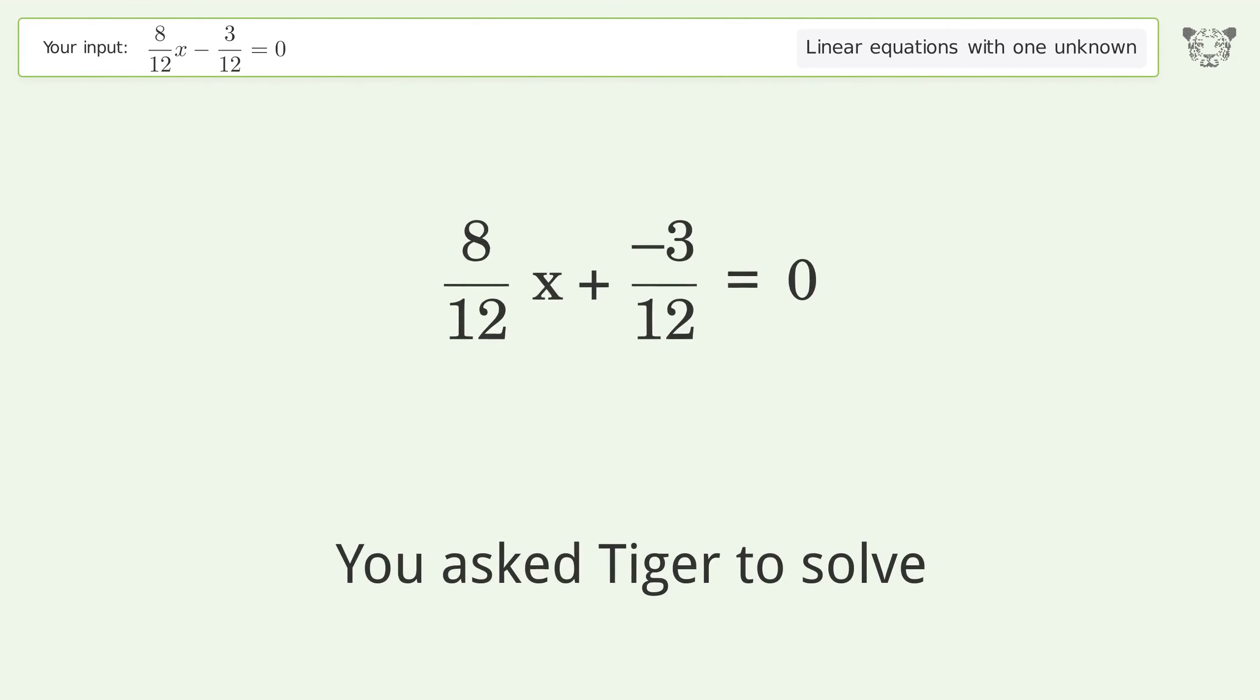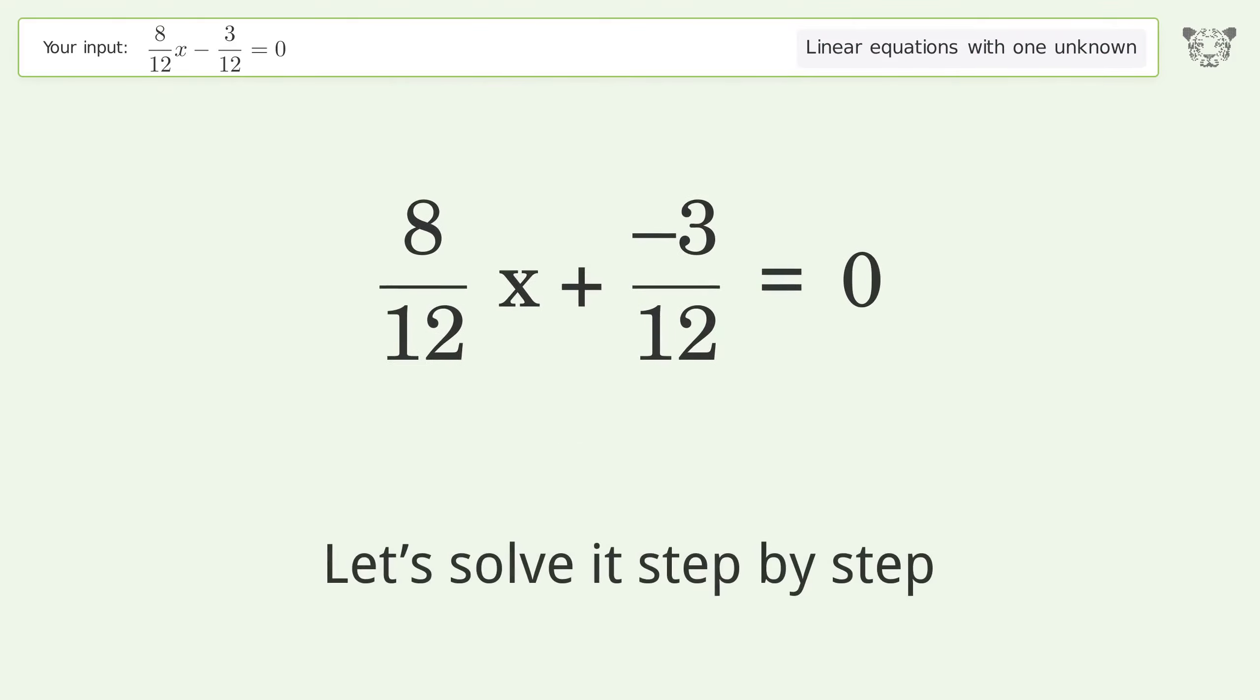You asked Tiger to solve this. This deals with linear equations with one unknown. The final result is x equals 3 over 8. Let's solve it step by step. Simplify the expression.